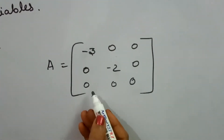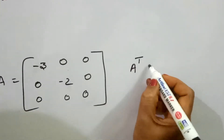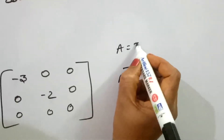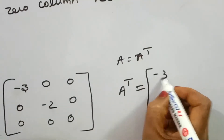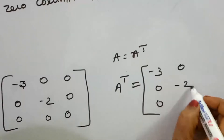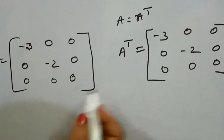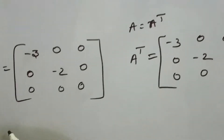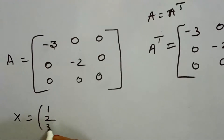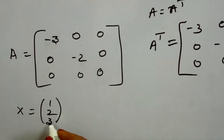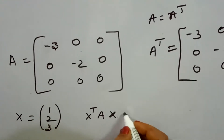Let's see. A is a matrix — specifically a symmetric matrix. We will verify that A transpose equals A. We change and confirm that the vector product x transpose Ax holds for this symmetric matrix.